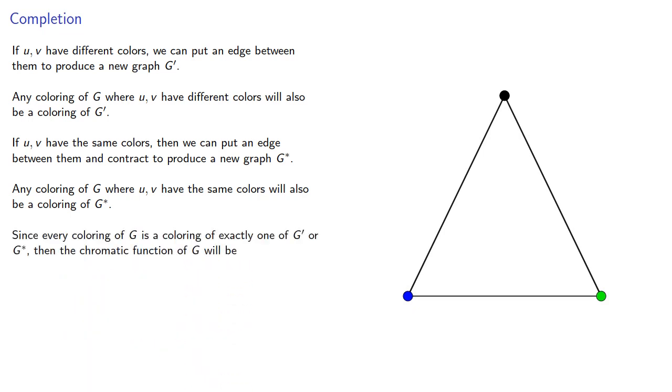Since every coloring of g is a coloring of exactly one of g prime or g star, then the chromatic function of g will be the chromatic function of g prime plus the chromatic function of g star.